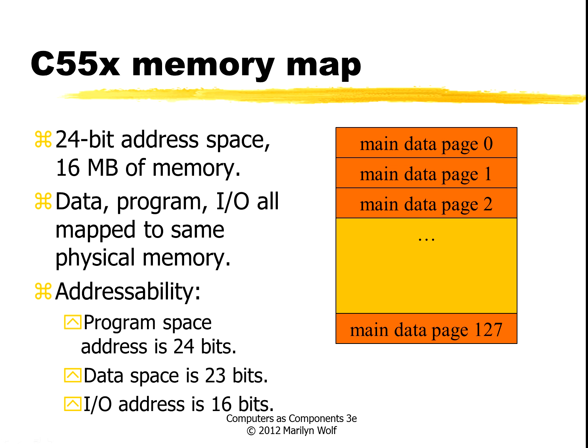The memory map for the C55X is divided into 128 data pages. It's a 24-bit address space with 16 bits of memory. Data, program, and input/output are all mapped to the same physical memory. The program space is 24 bits, the data space has a 23-bit address, and the I/O space only has 16 bits. Many of the registers are memory mapped into page zero of memory.